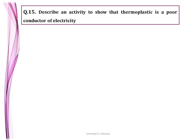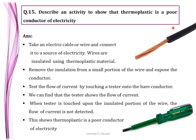Question number fifteen: describe an activity to show that thermoplastic is a poor conductor of electricity. Take an electric cable connected to a source of electricity — wires are usually insulated using a thermoplastic material such as polyvinyl chloride (PVC). Remove the insulation from a small portion of the wire to expose the conductor. Touch a tester onto the bare conductor — the tester shows flow of current. When the tester is touched upon the insulated portion, no current is detected. This shows that thermoplastic is a poor conductor of electricity.